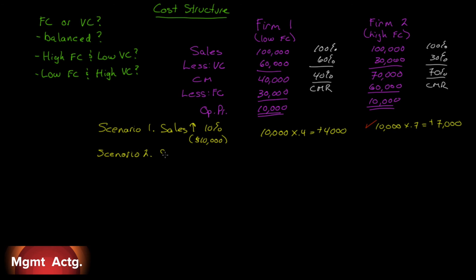Well, let's go with Scenario 2. Sales drop 10%. That's a drop of $10,000. Negative 10,000. So negative 10,000 times our contribution margin ratio of 0.4 means our contribution margin drops by $4,000. However, Firm 2, $10,000 times 0.7, because they have lower variable costs, their contribution margin drops by 7,000. Firm 1 is in the better position. So if we think that sales are going to drop from here, we want less fixed costs and higher variable costs.